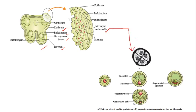The microspore mother cell is a gamete mother cell which will form the gamete. It undergoes reductional division, which we call meiosis, and will form a microspore tetrad. This is a microspore tetrad.